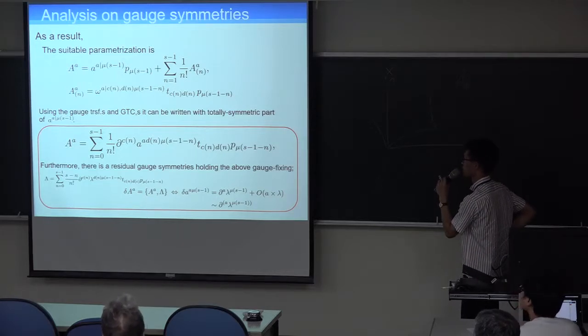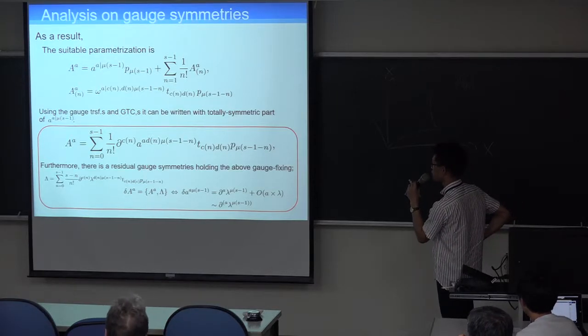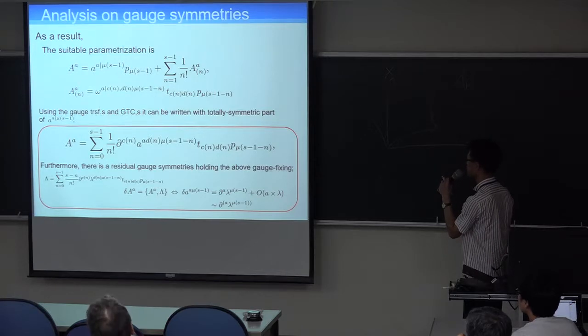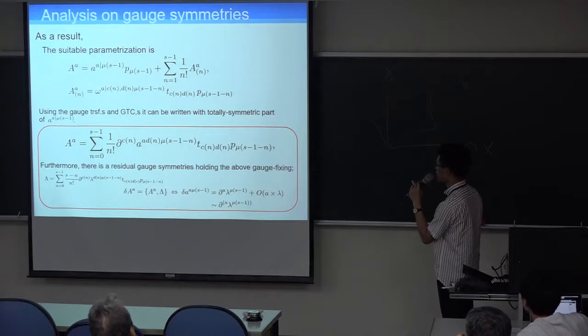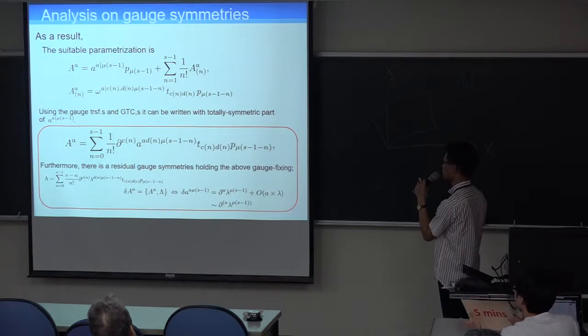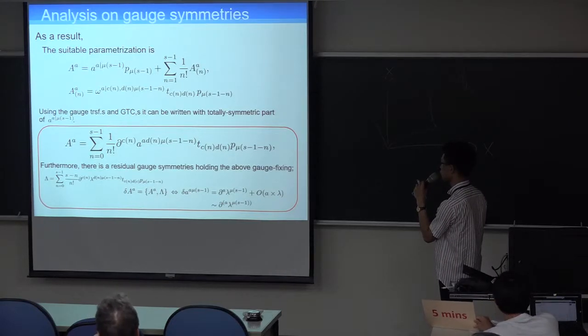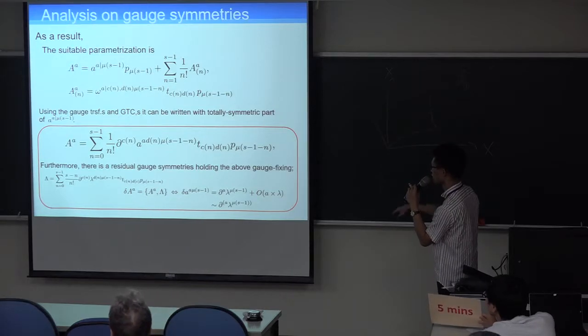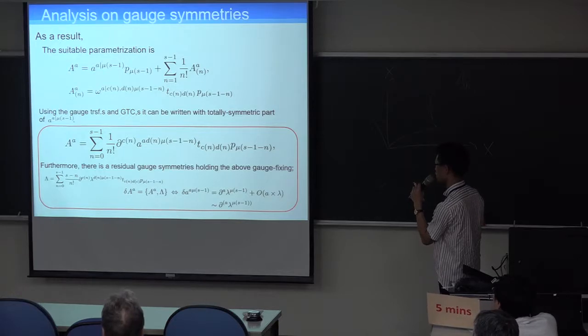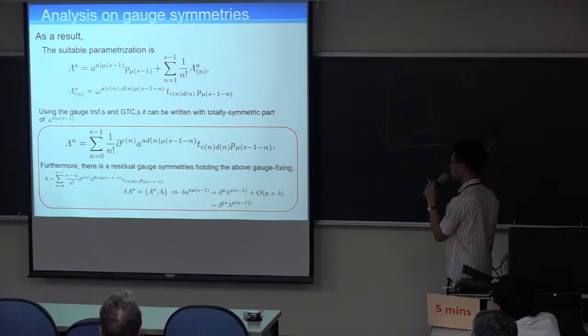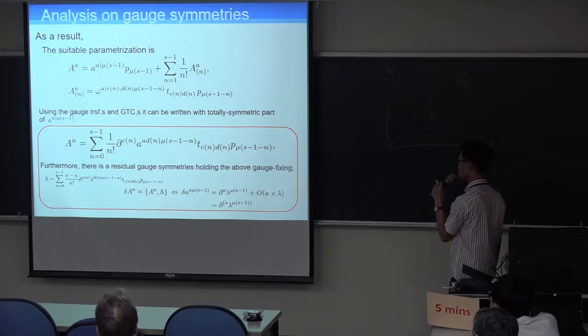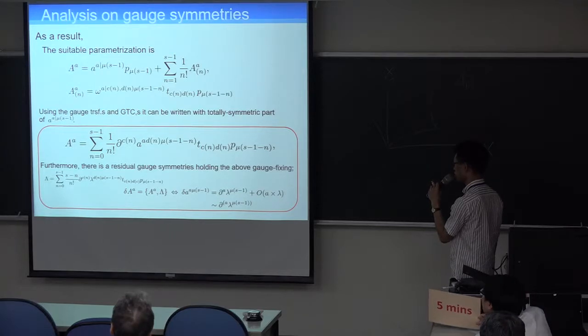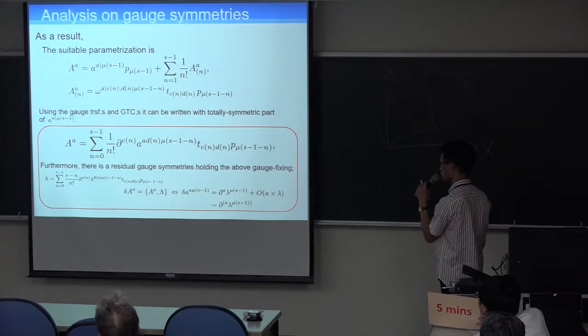As a result, the suitable parameterization, which has the manifest higher spin symmetry, is written by the original fields plus some auxiliary fields. Here, using the gauge transformations and generalized torsion-free conditions, it can be written with totally symmetric parts of the original fields. Furthermore, there is a residual gauge symmetry surrounding the generalized torsion-free condition. So we can remove the longitudinal components of these totally symmetric fields.